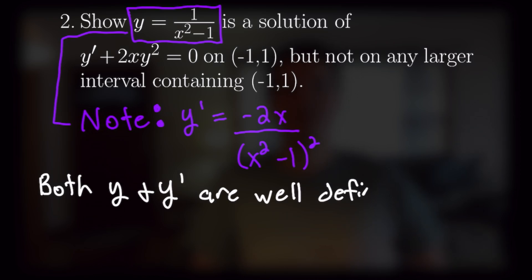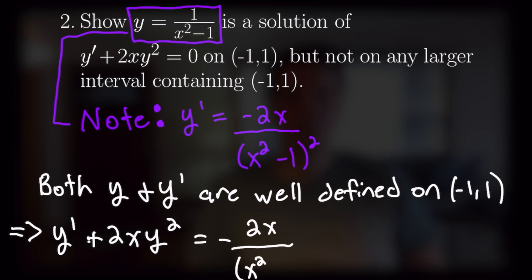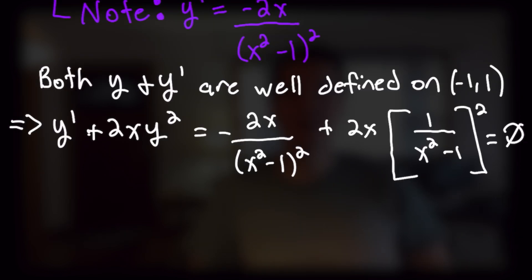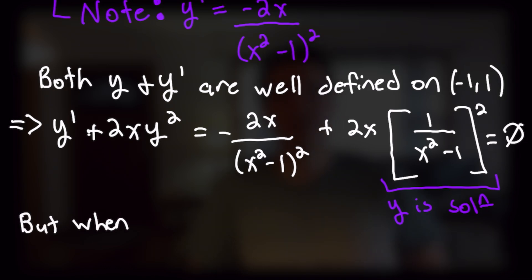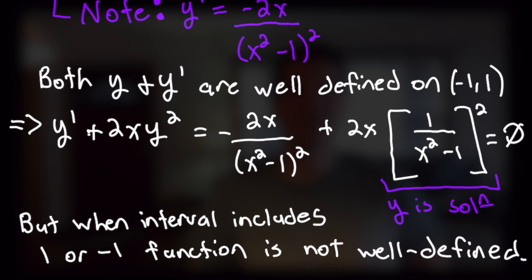There are no singularities or issues in the denominator on that interval. We substitute y into our original equation, writing it as a clever way to express 0: our original derivative negative 2x over (x squared minus 1) squared, plus 2x times (1 over x squared minus 1) squared equals 0. Writing it this way makes it clear that 1 over x squared minus 1 is a solution. If we expand our interval beyond negative 1 to 1, we have issues with the denominator and y is not well defined, so this is the smallest interval on which this is a solution.